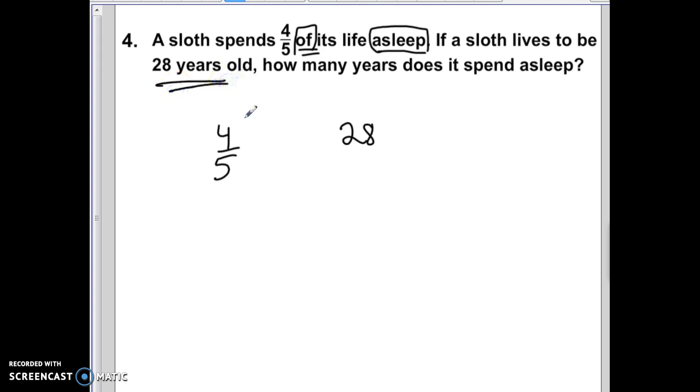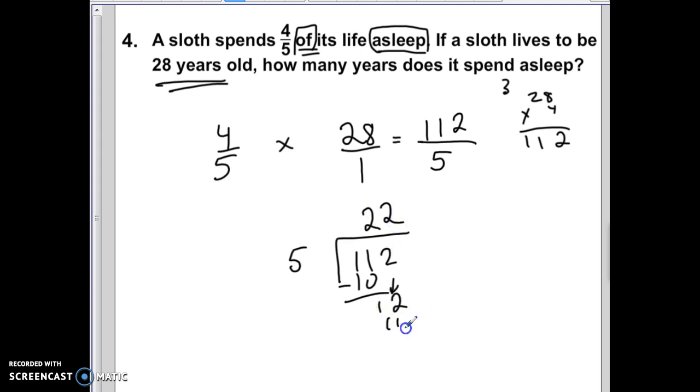The sloth has been alive for 28 years old, so let's go ahead and set up a multiplication problem. We're going to put 1 under our 28, and now we can multiply across. 28 times 4. I'll go on my scrap so I can solve it correctly. Looks like I get 112. And 5 times 1 is 5. Now we're going to go ahead and Tebow, so we can get a simple answer. Bring down the 2. 5 goes into 12 two times. With a remainder of 2.